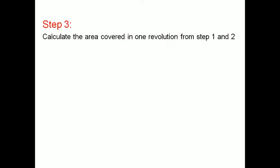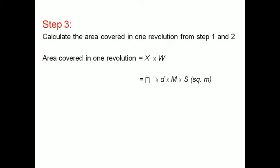Step 3: Calculate the area covered in one revolution using steps 1 and 2 — that is, how much area is covered by the seed drill in one revolution of the transport wheel. Area covered in one revolution is equal to the circumference of the transport wheel multiplied by the width: A = X × W, where X is π × D and W is M × S.